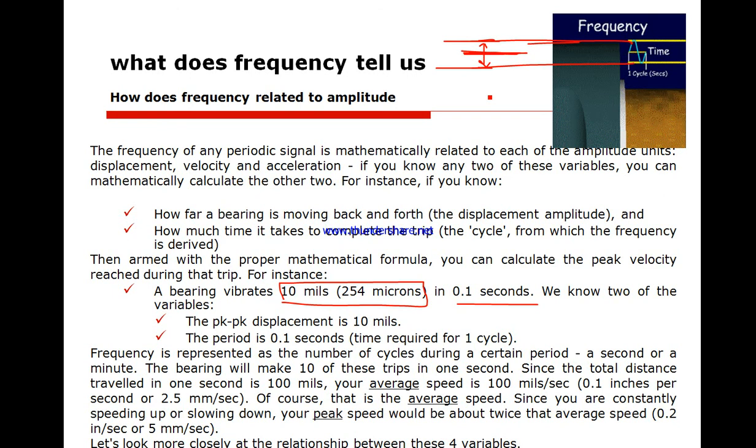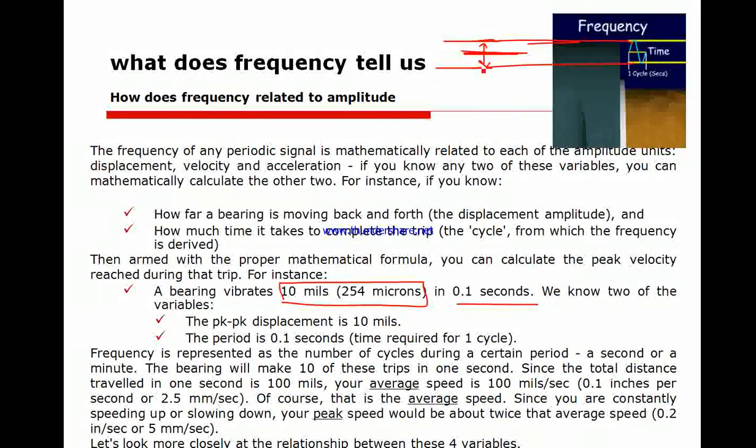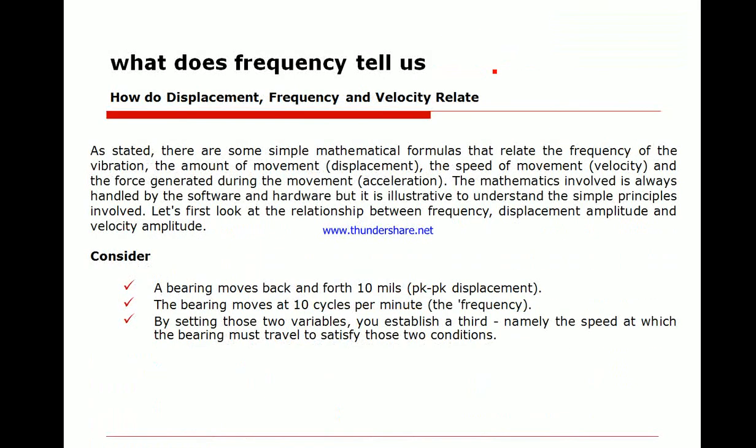I need to remind you it always fluctuates. This value is equal to average, so you multiply it by 2 which is 5 millimeter per second. Let's see the close relationship between all those variables.